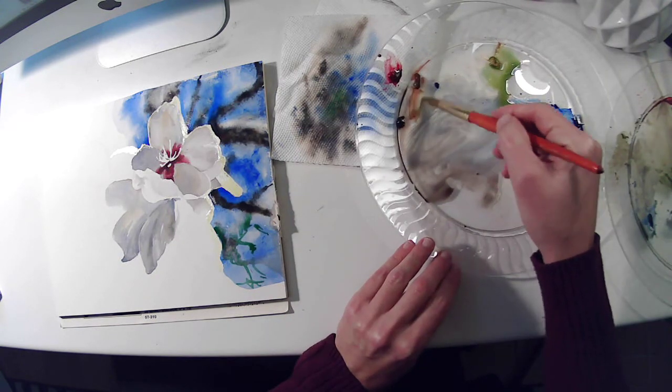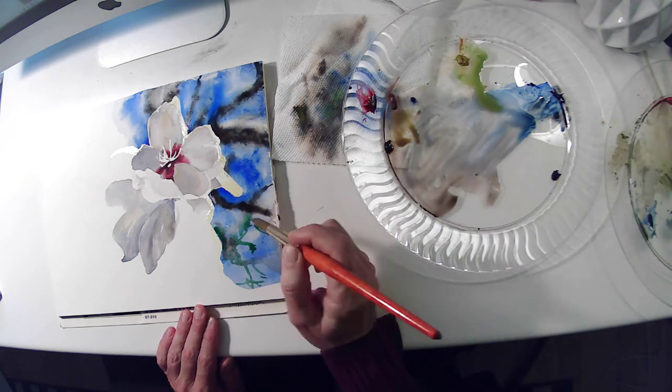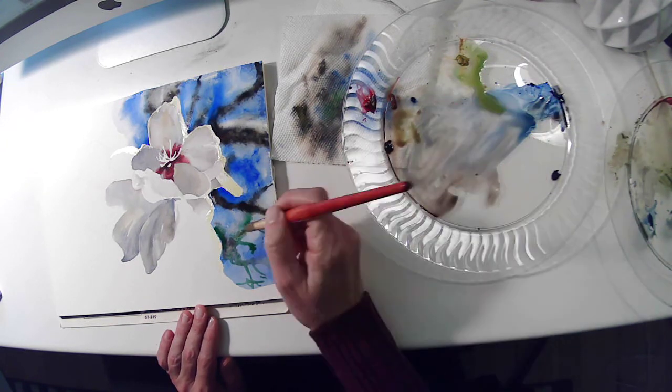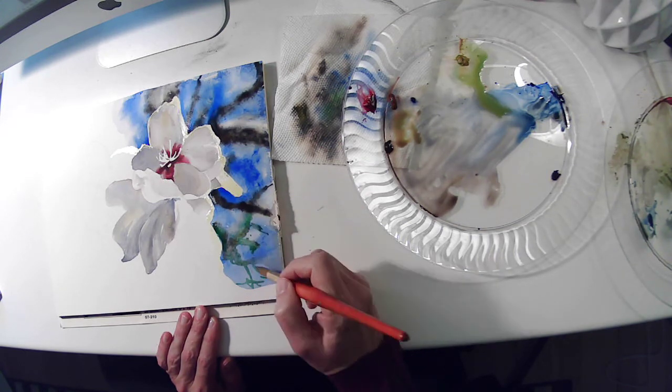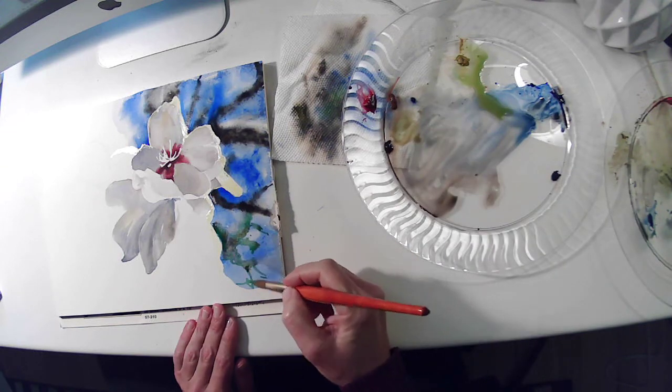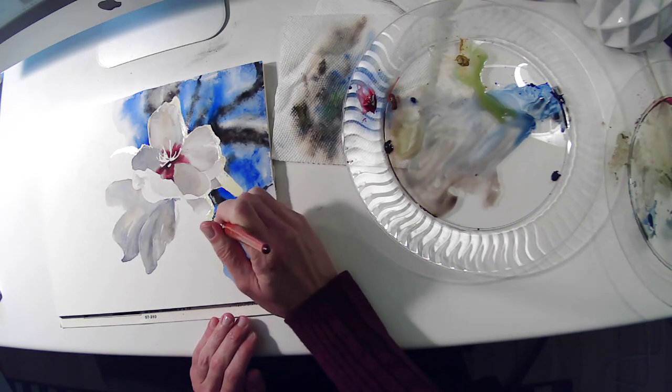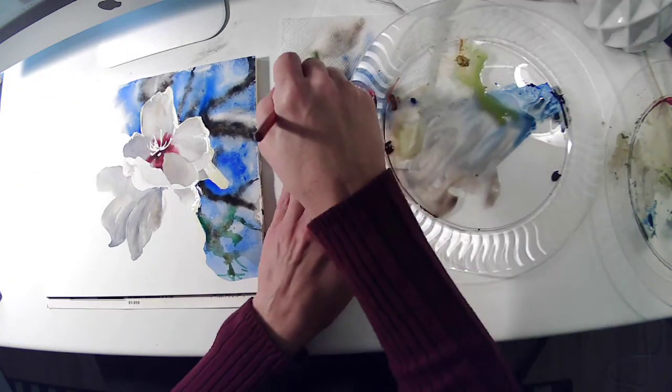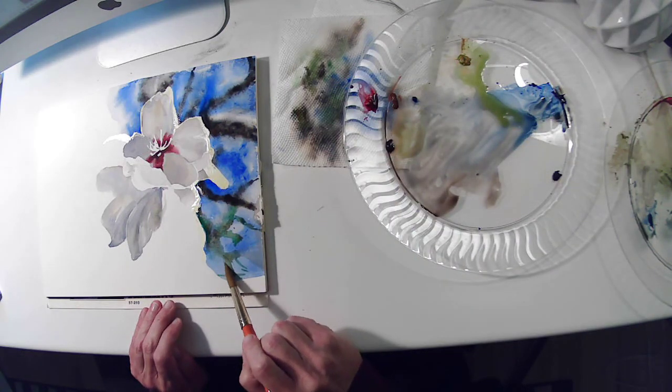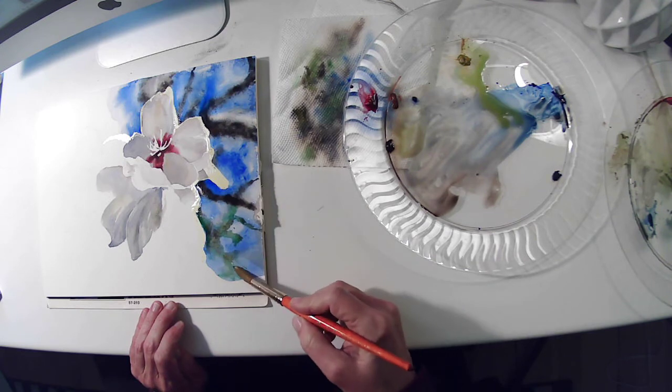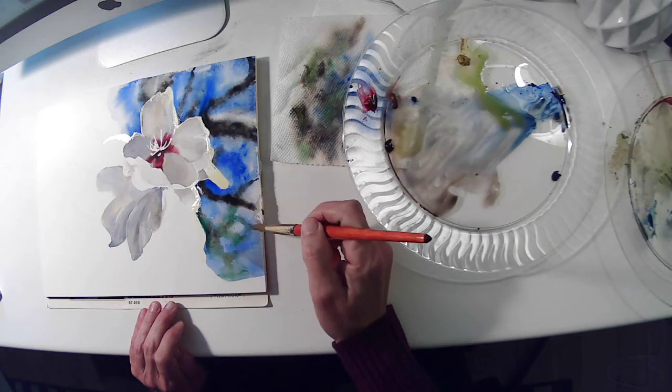And then I'm going to go back with my burnt sienna, which is my brown. And I'm going to drop in some of the brownish, kind of yellow ochre on top of that green. I'm going to let some parts of it kind of puddle up a little bit. And then I'm going to go back with a little bit of water in my brush. And again, just kind of allow some of those forms that I put in there to be obscured, to be softened.